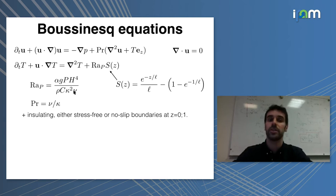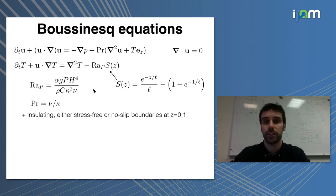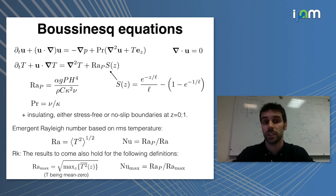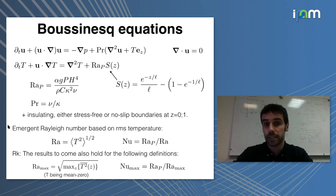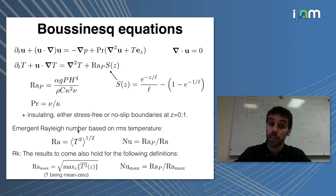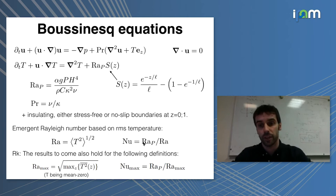We consider this set of equations with insulating boundaries everywhere and either stress-free or no-slip boundaries at Z equals zero and Z equals one. We fix the heat flux and measure the temperature drop as the emergent quantity. For the analysis I'll use a convenient Rayleigh number based on the root-mean-square temperature in the system, averaged over space and time. Once the Rayleigh number is defined, the Nusselt number is simply defined as the flux-based Rayleigh number divided by the temperature-based Rayleigh number.